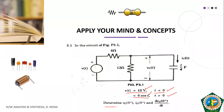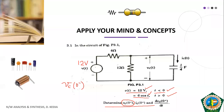We have to determine VC(0+), IC(0+), and the derivative of VC(0+) with respect to time. First we will target the calculation of VC(0+). We know that the voltage across the capacitor cannot change instantaneously, so VC(0+) equals VC(0−). We will have to obtain VC(0−) first. VC(0−) means the voltage across the capacitor for T less than 0, when we had applied 12 volt for infinite duration of time.